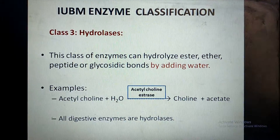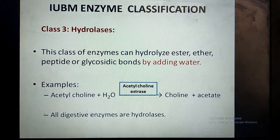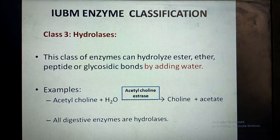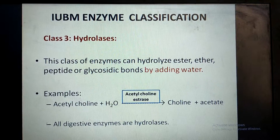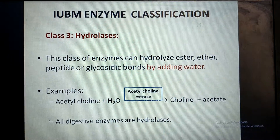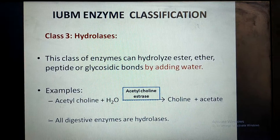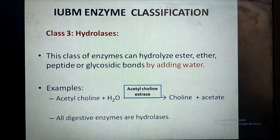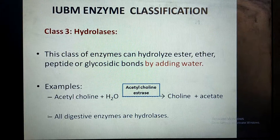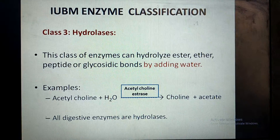The third class is hydrolases. In this class, those enzymes are present which break bonds by adding a water molecule. They break bonds like ester bonds, ether bonds, peptide bonds, and glycosidic bonds. For example, the enzyme acetylcholinesterase breaks the bond between acetate and choline by adding a water molecule. All the enzymes of the digestive system belong to the hydrolase class.